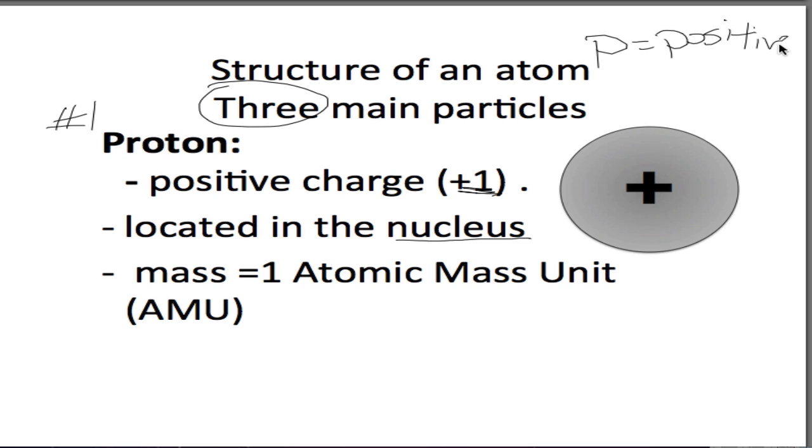One little trick I like to use, P for positive, is positive one charge is in the nucleus. Now atoms are super duper tiny. And so we have to use a special unit to measure the mass of a proton. We use the abbreviation AMU, one atomic mass unit. So one proton is equal to one atomic mass unit located within the nucleus has a positive one charge.